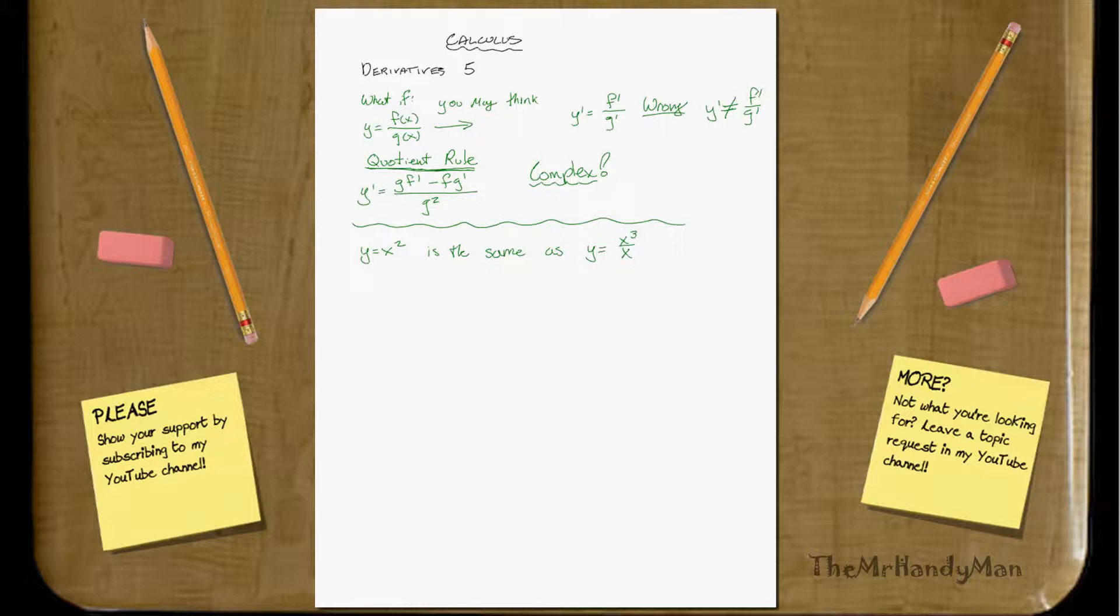So that makes sense. So remember that we know that when y equals x squared, that y prime is equal to 2x. We know that. I mean, we've done that problem a few times now.